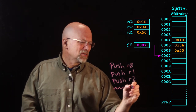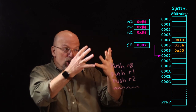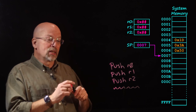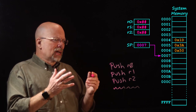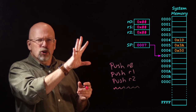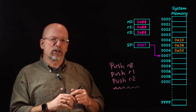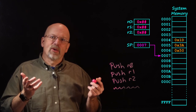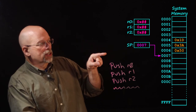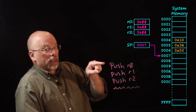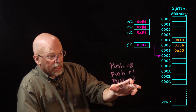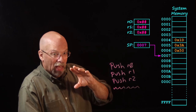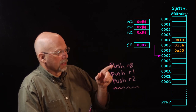Then we do all sorts of stuff — a bunch of lines of code where we use R0, R1, and R2, modifying those values, getting them manipulated. Now that we're done with our code, we want to restore what was in R0, R1, and R2. We look at the stack, and the stack pointer — hopefully the code in here didn't modify the stack pointer — it needs to point at the correct position, which should be seven. We need it to have integrity to point at the correct position.